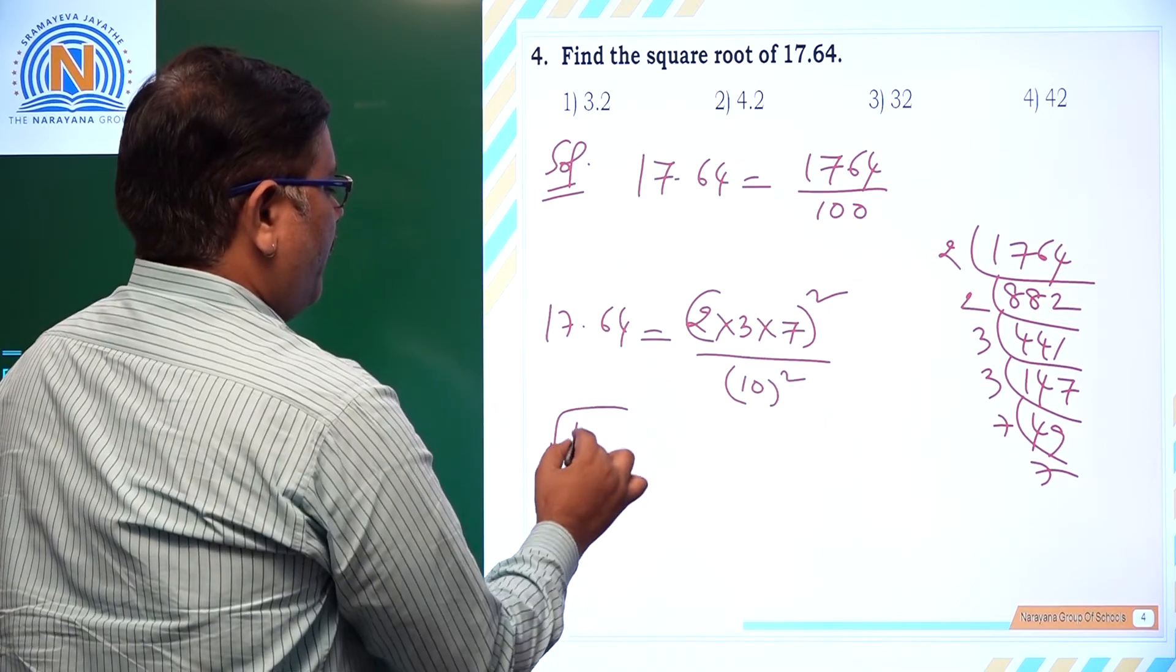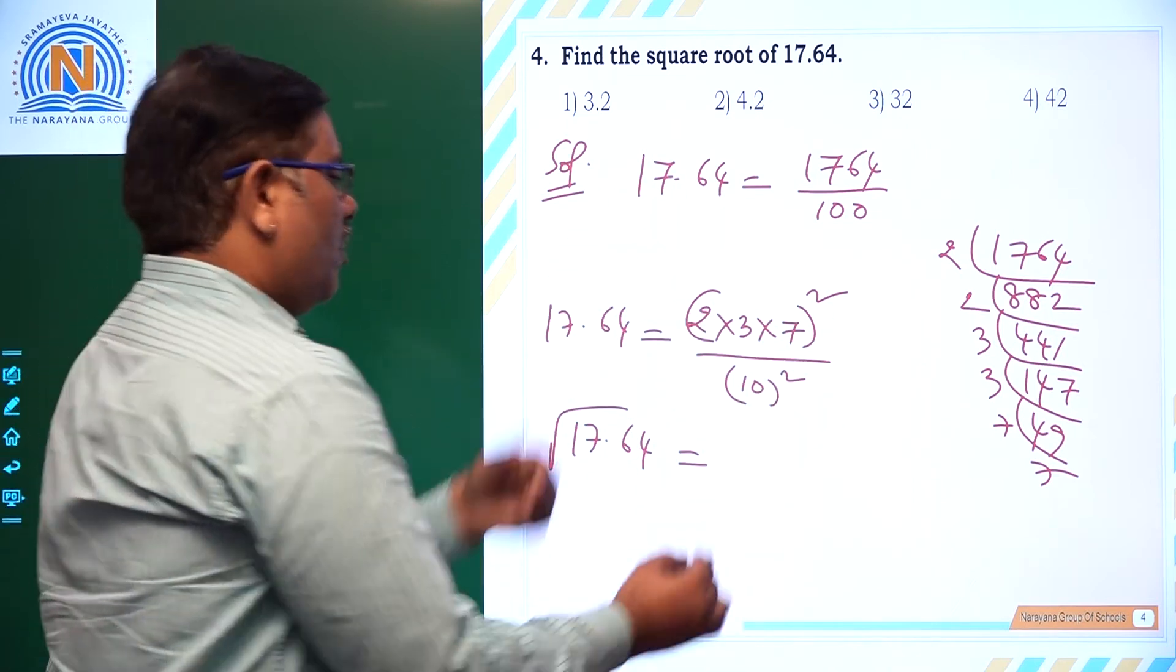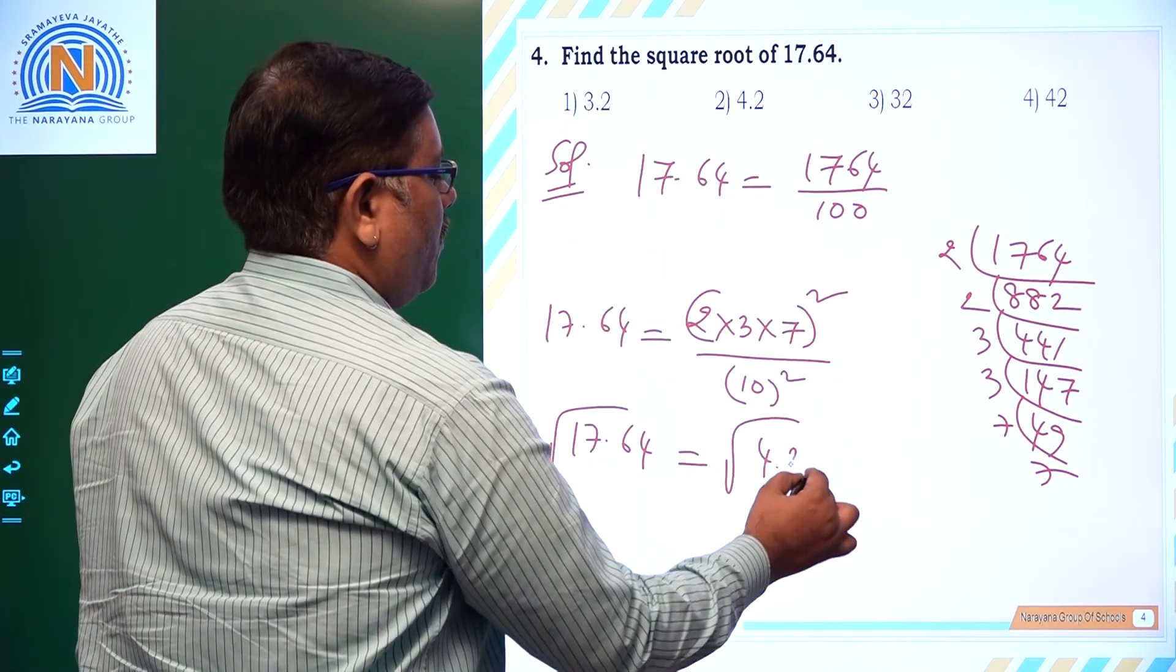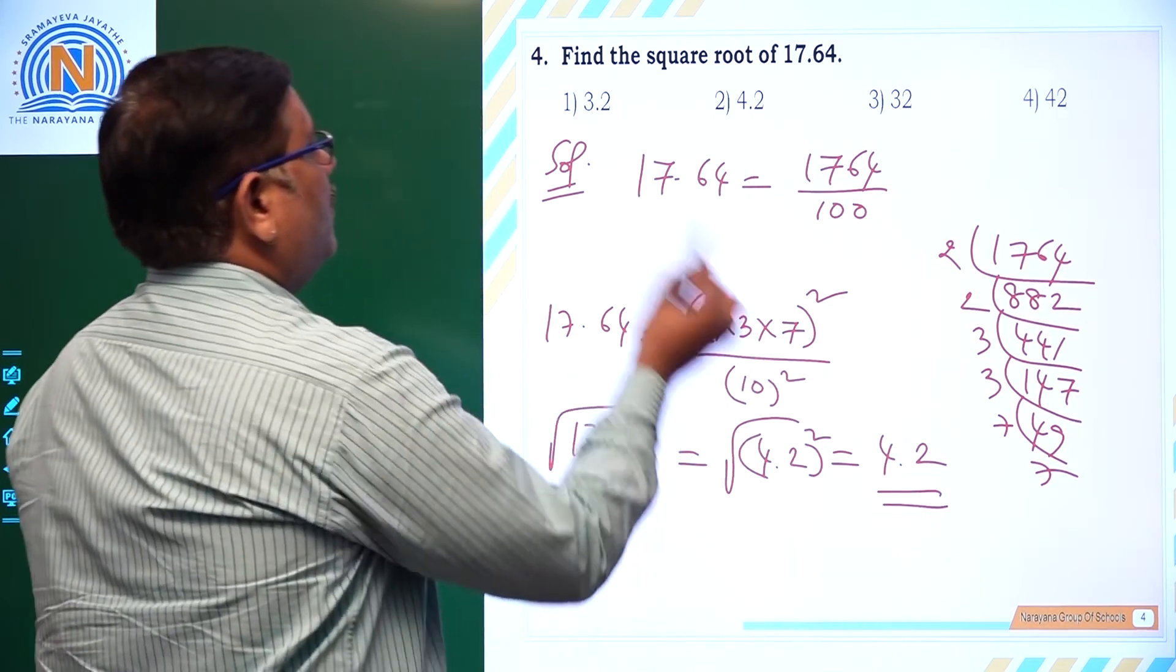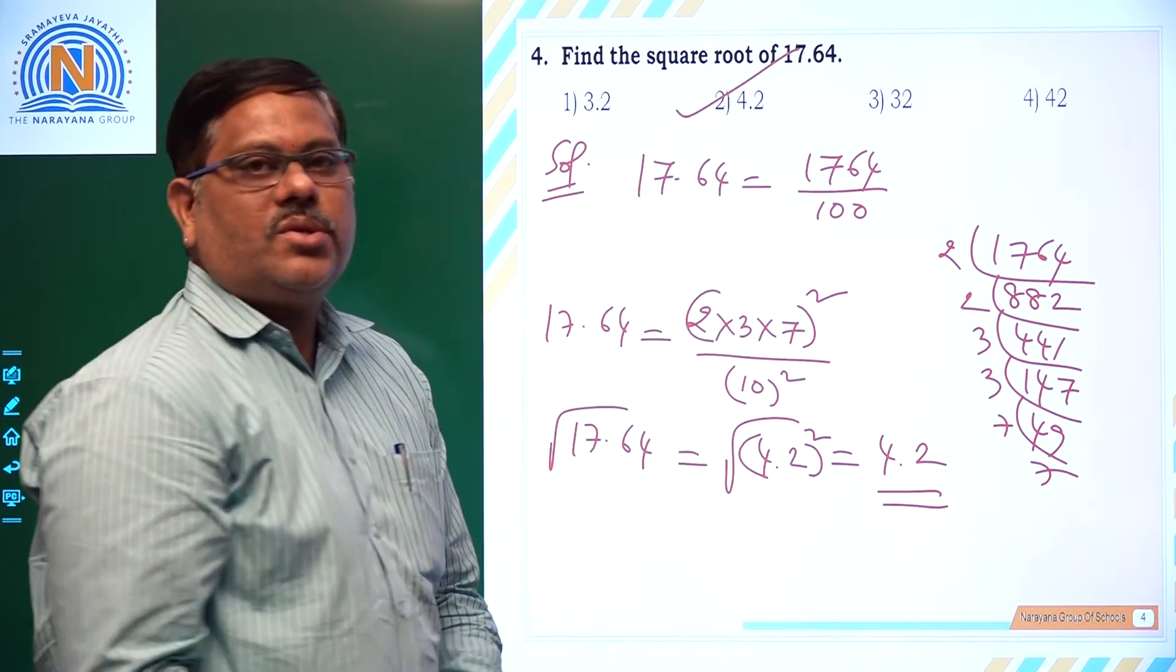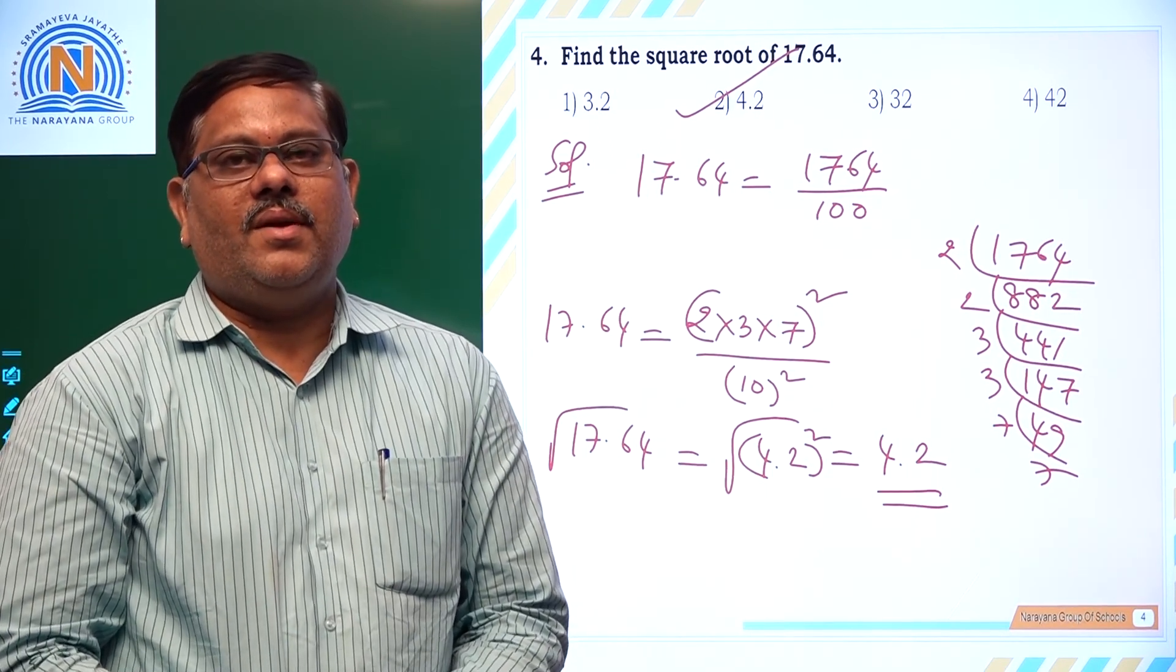So 17.64 we can write as 2 into 3 into 7 whole square upon 10 square. So under root of 17.64 is nothing but 42 by 10, that's 4.2 whole square, root over 4.2 whole square. That is 4.2 for us, that is second option. So that is the right answer. That is the end of this assignment. Thank you. Have a great day.